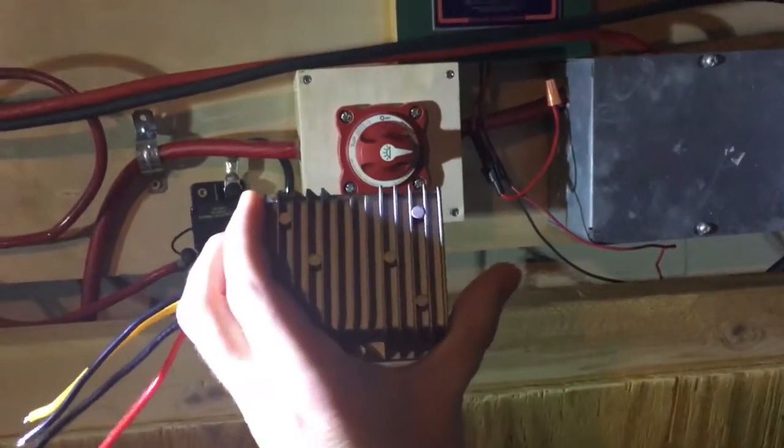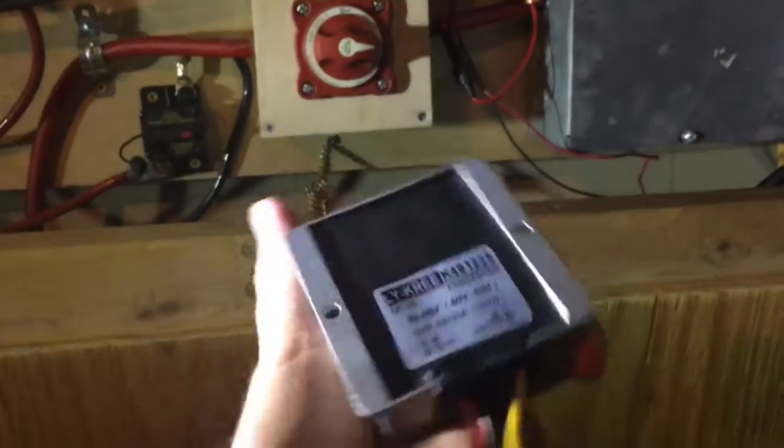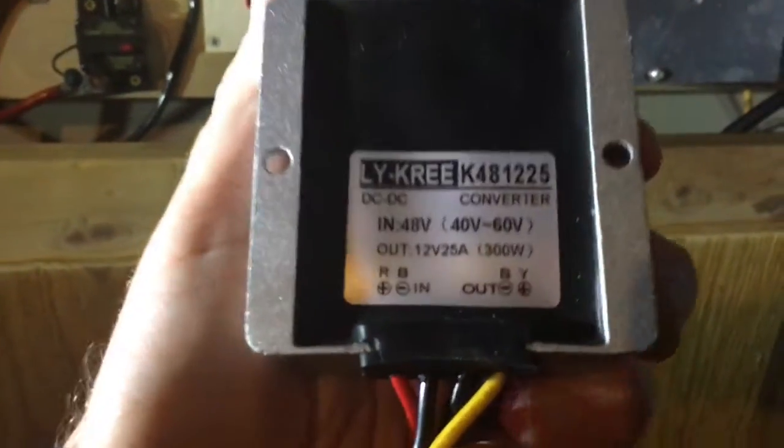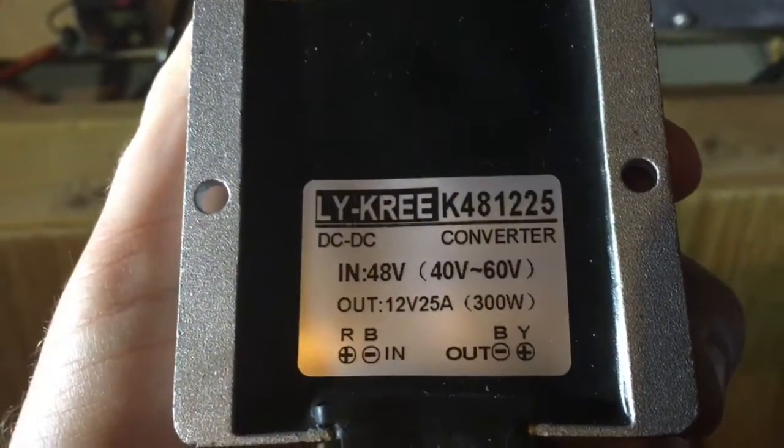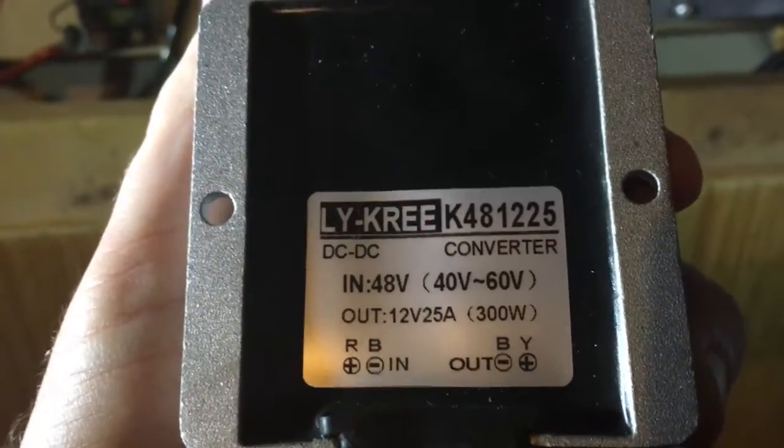I bought this DC step-down converter. As you can see, it will take a 45-volt input and output it at 12 volts.